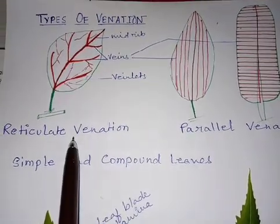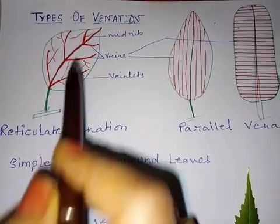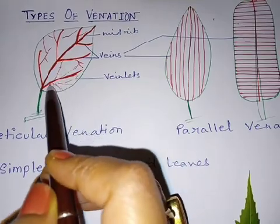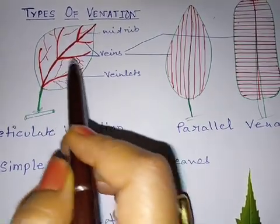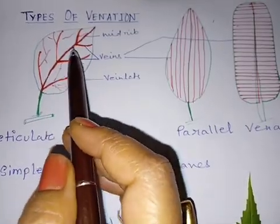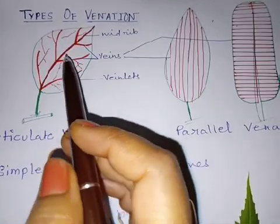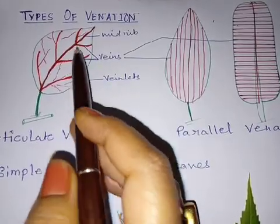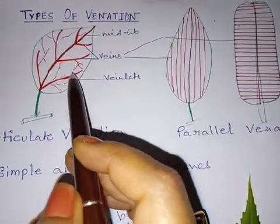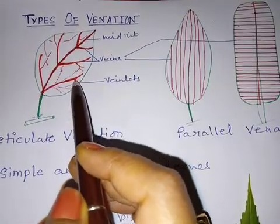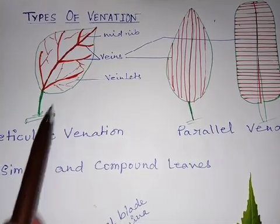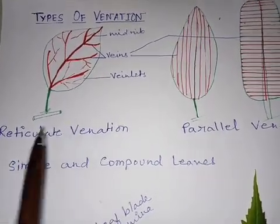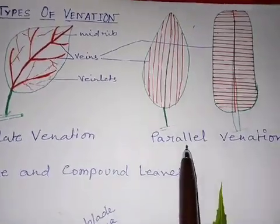In reticulate venation, the veins and veinlets are running irregularly in the leaf lamina. Such type of arrangement of veins in the leaf lamina is called reticulate venation.